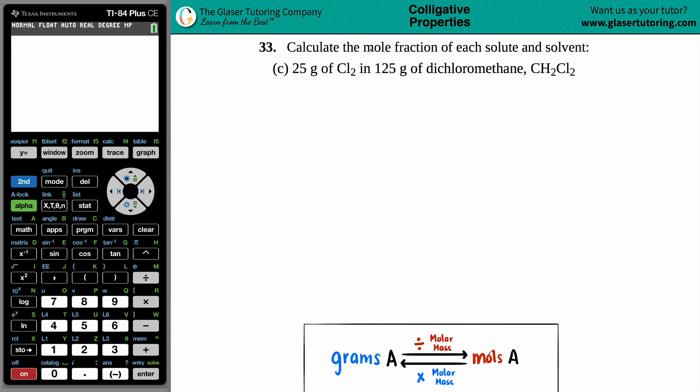Number 33, calculate the mole fraction of each solute and solvent, and then we have letter C. So in this case, we have 25 grams of Cl2 in 125 grams of dichloromethane, which is CH2Cl2.